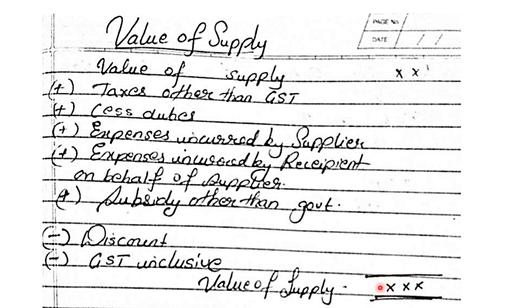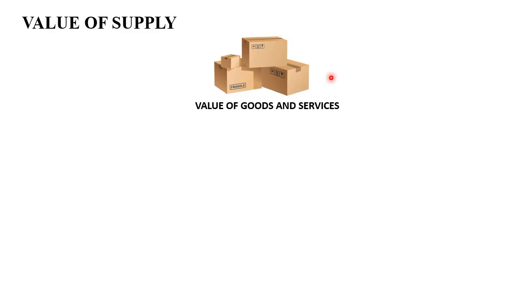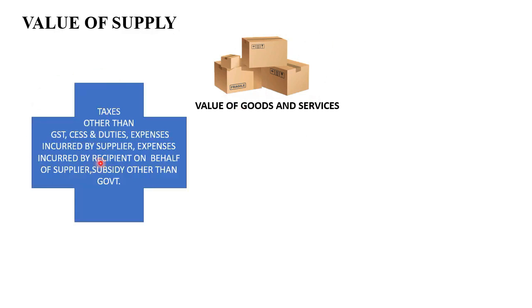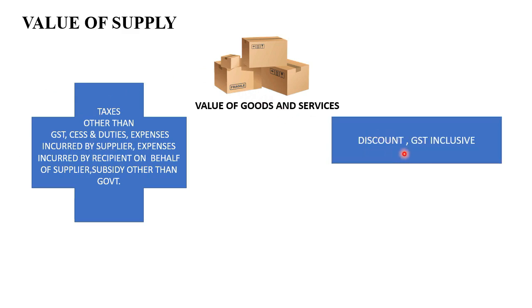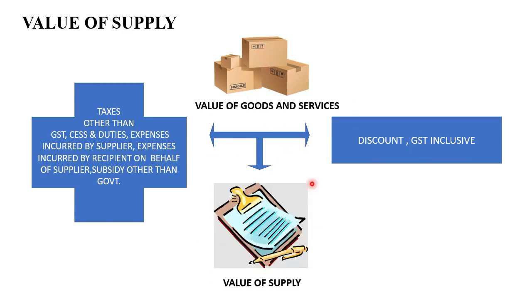To summarize the format: value of supply equals the value of goods and services, plus all taxes other than GST, plus all cesses and duties, plus all expenses incurred by the supplier and by the recipient on behalf of the supplier, plus all subsidies other than government subsidies, minus any discount and minus GST if inclusive. Whatever net amount results is your value of supply.